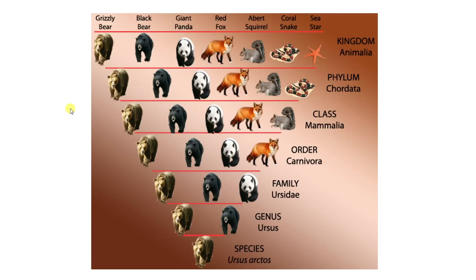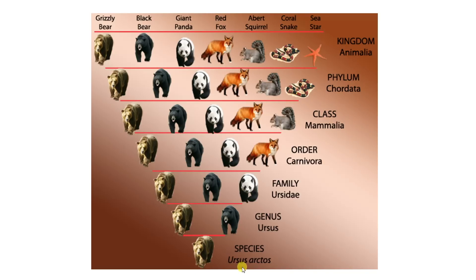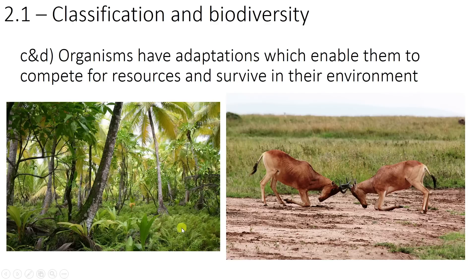To come back to the triangle diagram from the title screen: it gets progressively more specific moving down. At the top we have kingdom Animalia, then Chordata, then Mammalia, then Carnivora — this is where the word 'carnivore' comes from, it's actually an order. All the way down to the grizzly bear, whose actual scientific name is Ursus arctos. And that brings us to the end of that spec point.